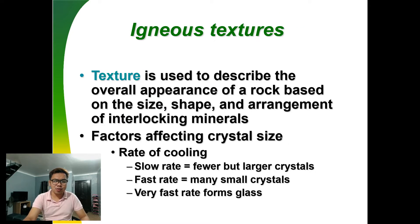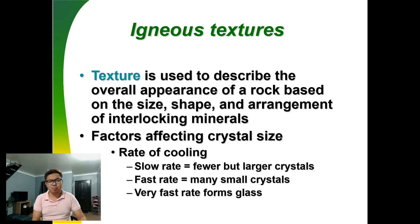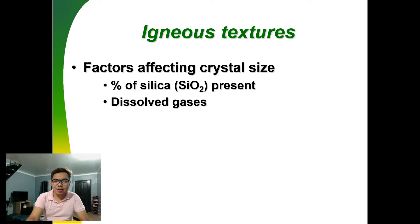Texture is used to describe the overall appearance of a rock based on the size, shape, and arrangement of its minerals. Geologists studying rocks feel and examine them — if the rock is smooth or rough, that already has an interpretation. Regarding factors affecting crystal size: large but few crystals indicate a slow rate of cooling; many small crystals indicate a fast rate of cooling; and very fast cooling results in glass. Other factors include the percent of silica present and the dissolved gases.